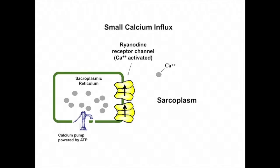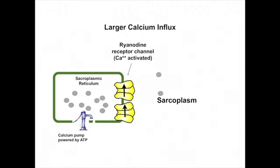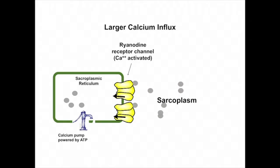The ryanodine receptors in cardiac muscle are not coupled to the dihydropyridine receptors the way they are in skeletal muscle. Rather, the channels are ligand-gated, and the ligand is calcium. In other words, the binding of calcium opens the receptors, thus binding calcium activates the release of calcium from the sarcoplasmic reticulum. The more calcium there is in the sarcoplasm, the more that binds to the ryanodine receptors, and thus more calcium is released into the sarcoplasm.